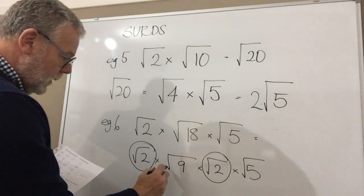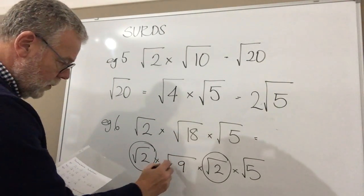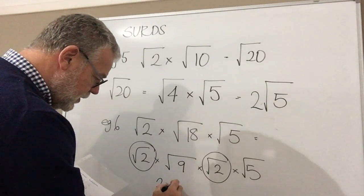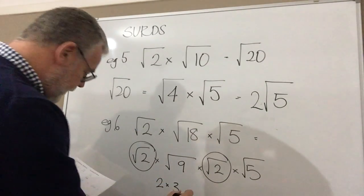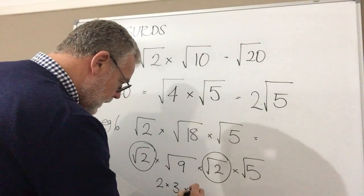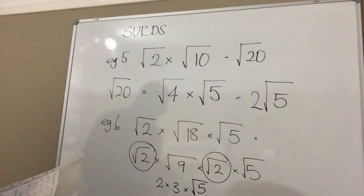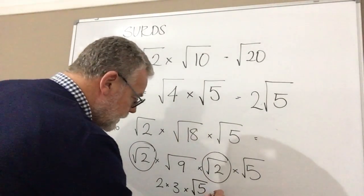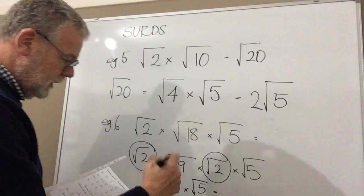Now what does that allow me to do? Root 2 times root 2, well that gets rid of the root doesn't it? So I end up with 2. Now when I think about here, what's root 9? It's 3, and then I've still got my root 5.